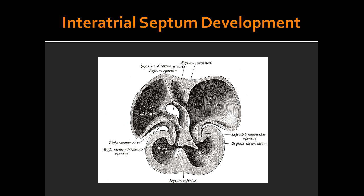What is happening on image 3 of the interatrial septum development? On image 3, you can see that the foramen secundum will continue to maintain the right-to-left shunt as septum secundum begins to grow.